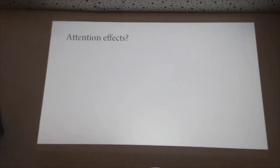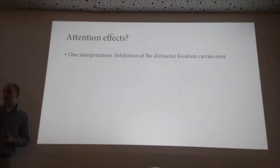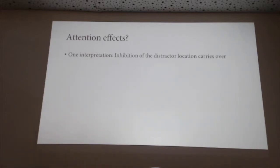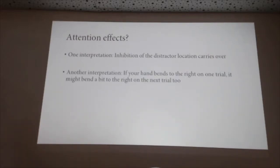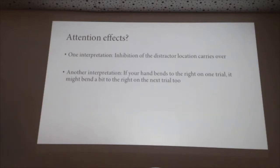In terms of interpreting these data, one interpretation — which I've been going with — is that inhibition of the distractor carries over. Another interpretation is perhaps less interesting: if your hand bends to the right on one trial, it might bend right on the next trial too. It's not simple motor priming in the sense that these sequences never involve reaching to the same place twice in a row, but you could interpret it as: if you were pulled this way before, you might just be pulled this way again when you move in another direction.